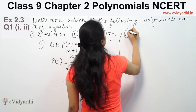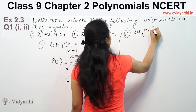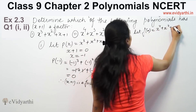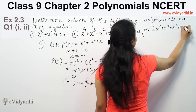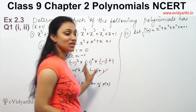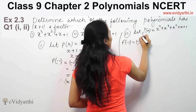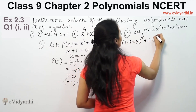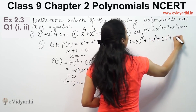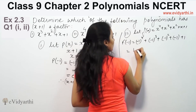Now for the second polynomial, let's write f(x). We are given f(x) equals x to the power 4 plus x cubed plus x squared plus x plus 1. We find f(minus 1): minus 1 raised to the power 4, plus minus 1 cubed, plus minus 1 squared, plus minus 1, plus 1. Minus 1 to the power 4 is 1.